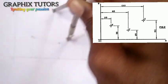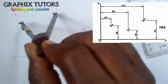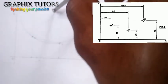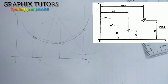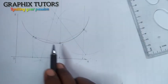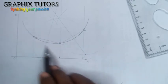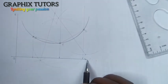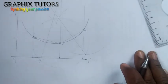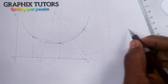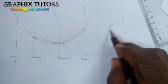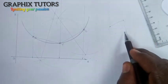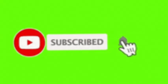We have successfully connected these three points with an arc. So whenever you are told to connect any three points, figure out how the points are arranged, connect them with straight faint lines, bisect each segment, and wherever the bisectors meet, draw an arc that will connect all three of them. If you find this video helpful, please don't forget to click the subscribe button. Thanks for watching.